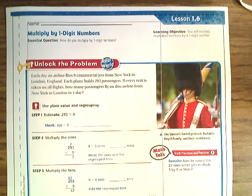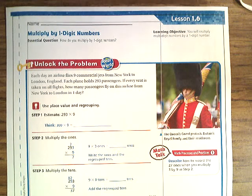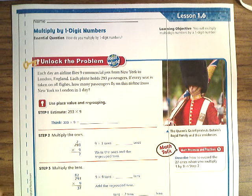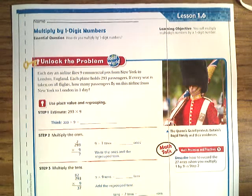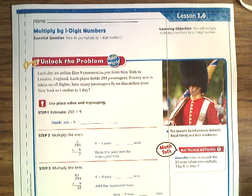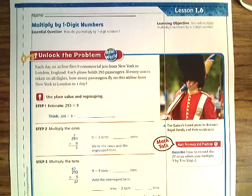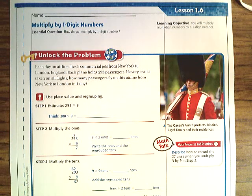Today we are looking at lesson 1.6 in our GoMath books. You are going to be using pages 37 through 42. Make sure you bring a pencil so you can write things down — the reason I have you use a pencil is so you can erase. If you need to pause this video and go get your pages, whiteboard, or pencil, go ahead and do that now. I'm going to be using a pen because it's easier to see.